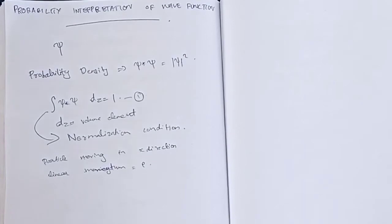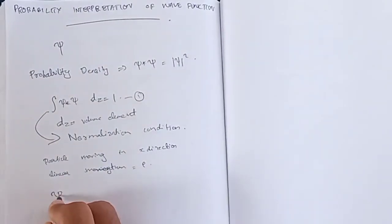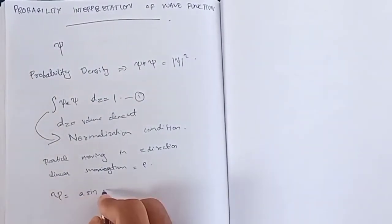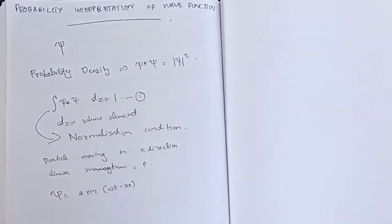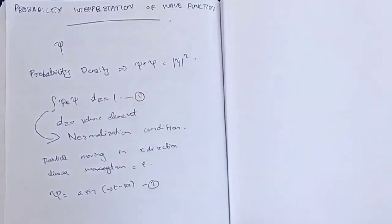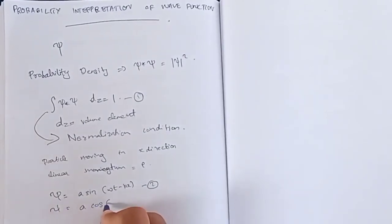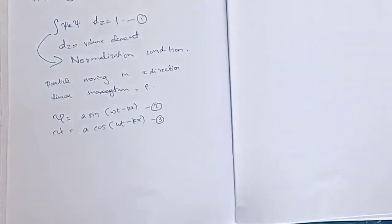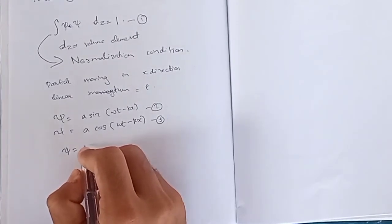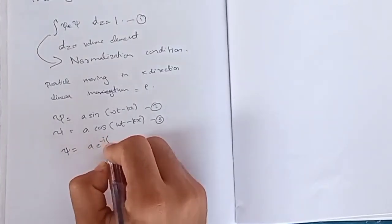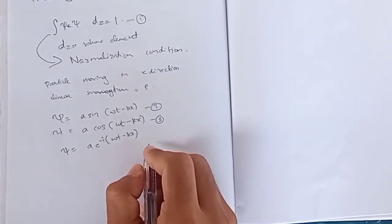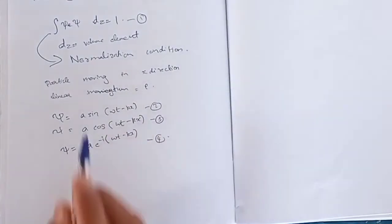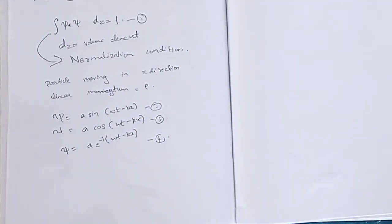This is a wave function equation with sin and cosine terms. ψ is equal to A sin(ωt − kx). The solution is the complex exponential form: ψ is equal to A e^(−i(ωt − kx)). So ψ = A e^(−i(ωt − kx)).